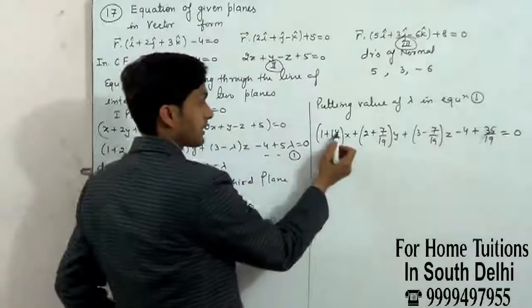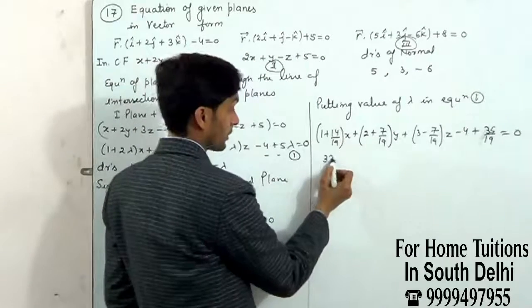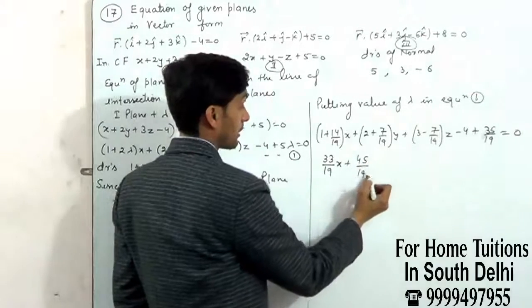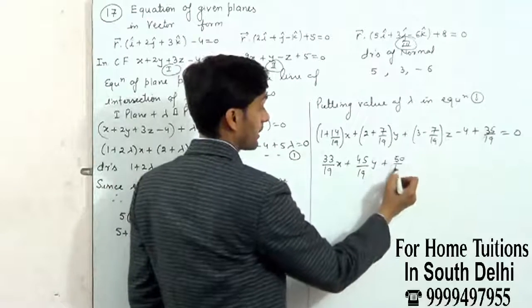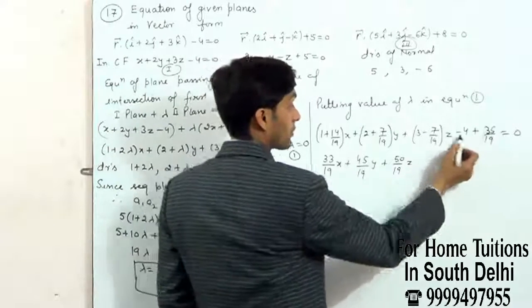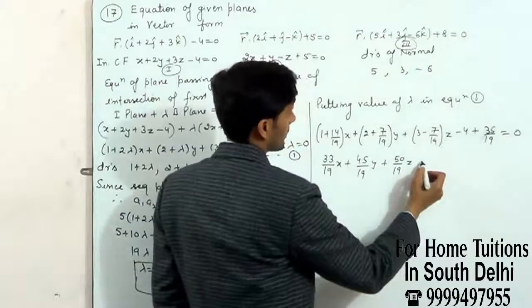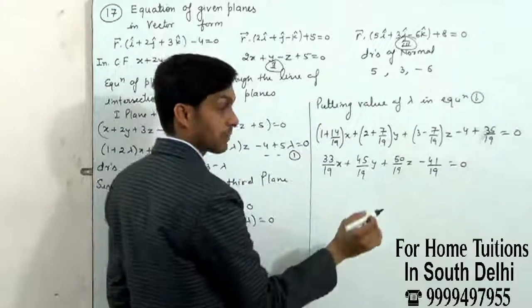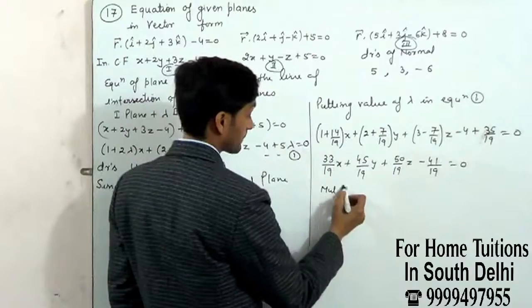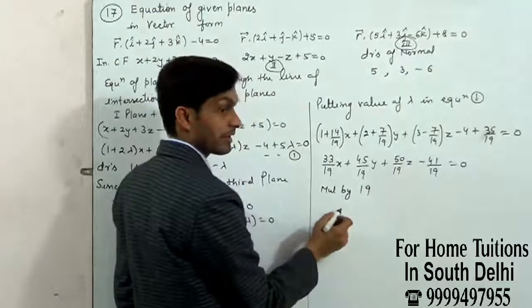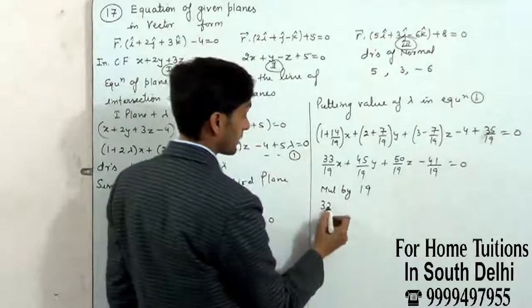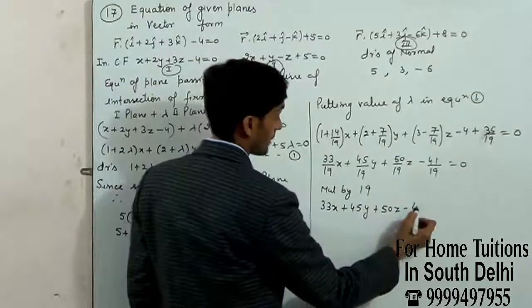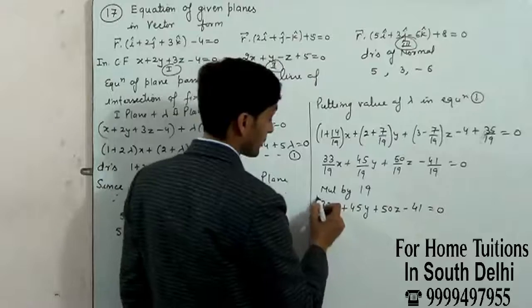33 by 19 X plus 45 by 19 Y plus 50 by 19 Z minus 41 by 19 equals 0. Multiply by 19: 33X plus 45Y plus 50Z minus 41 equals 0.